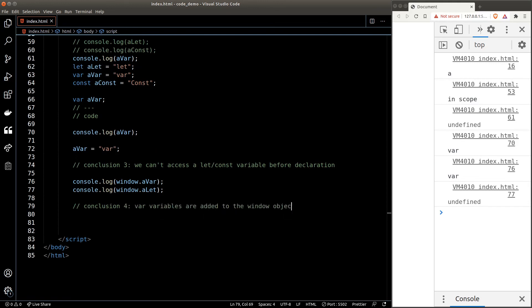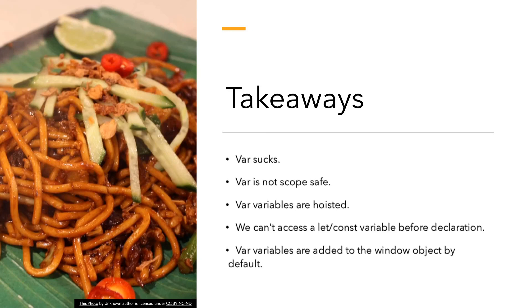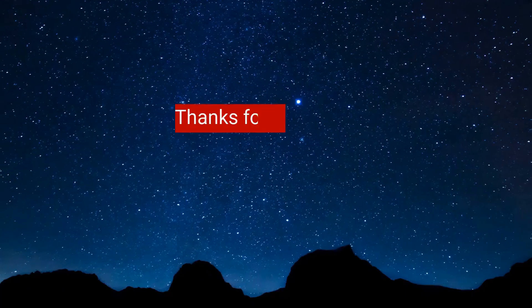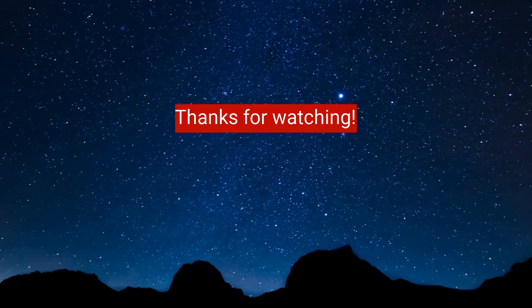So these are the differences between var and let and const. If you can get one message out of this video I hope it will be: do not ever ever use var. Key takeaways: var is not scope safe. Var variables are hoisted up — they are raised to the top of the global scope. We can't access a let or const variable before declaration. And finally, var variables are added to the window object by default.